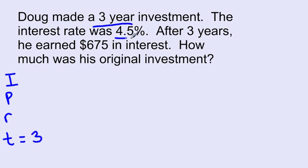He made a three-year investment. So I know my T equals 3. The interest rate was 4.5%. So I'm going to write that as a decimal. Just have to divide by 100. And after three years, he earned $675 in interest. So we are being asked to find his original investment, which is the principal amount.